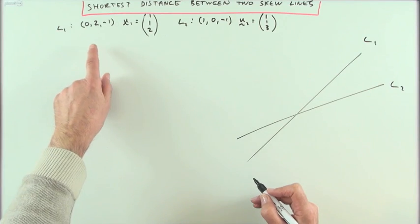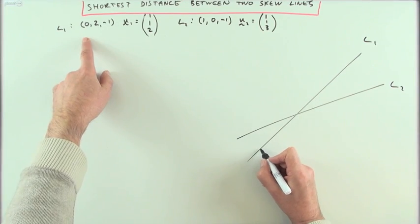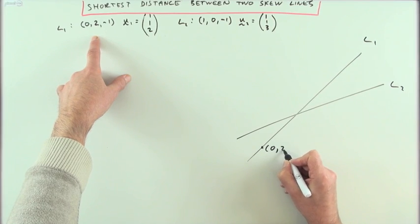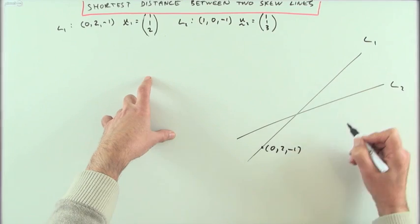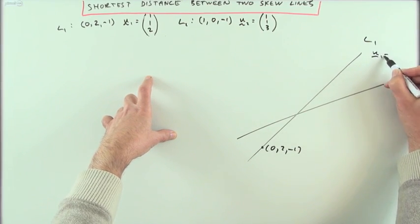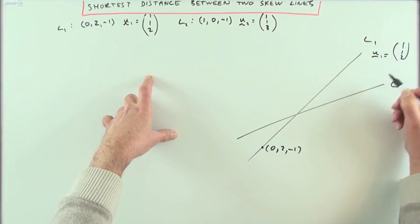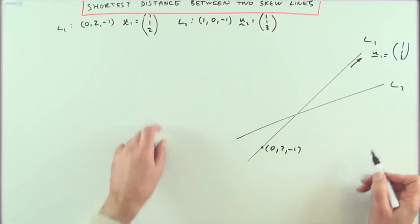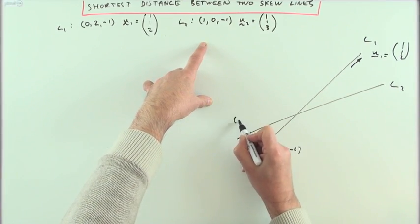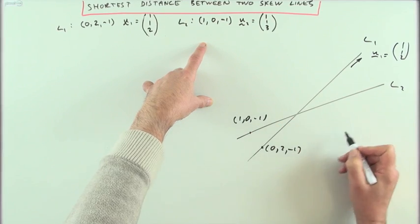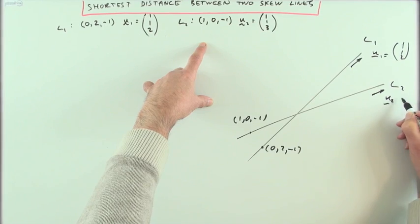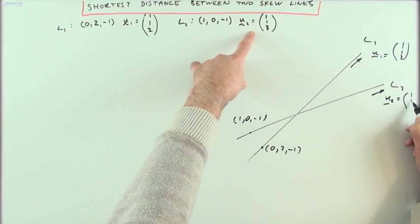Line one passes through the point (0, 2, -1) with a direction vector U1 of (1, 1, 2). Line two passes through the point (1, 0, -1) and it has a direction vector U2 of (1, 1, 3).